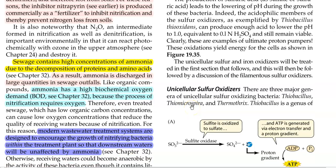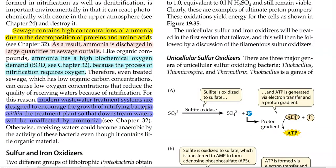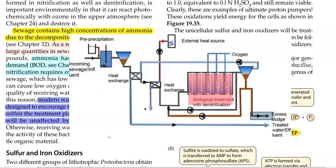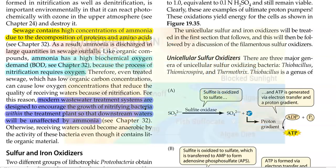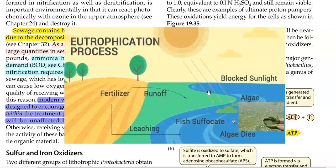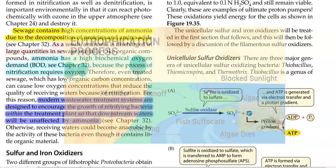One more environment in which ammonia dominates is sewage. Ammonia is discharged in huge quantities at sewage outfalls. This in turn increases the biochemical oxygen demand, since the process of nitrification requires oxygen. For this reason, modern wastewater treatment plants are designed to encourage the growth of nitrifying bacteria within the treatment plant, so that downstream water does not contain excessive nitrogen compounds, which may cause eutrophication problems when such sewage water is discharged into water bodies like ponds.